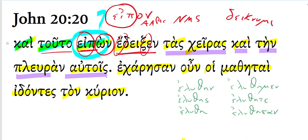Of course, possession can often be implied in Greek. It often is for body parts, like hands and your side. And when it is implied, the article is almost always there. So clearly, Jesus showed them his hands and his side to them.